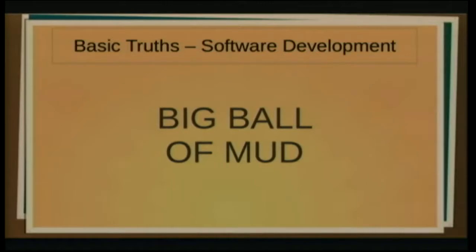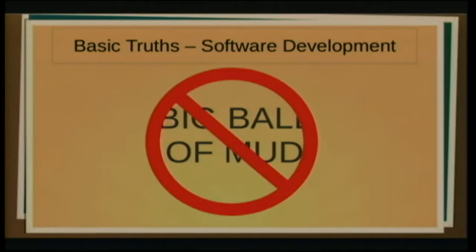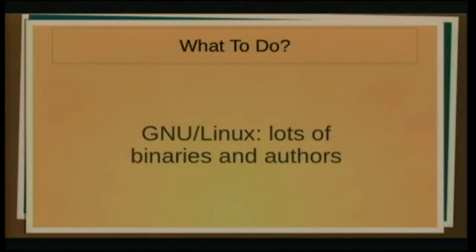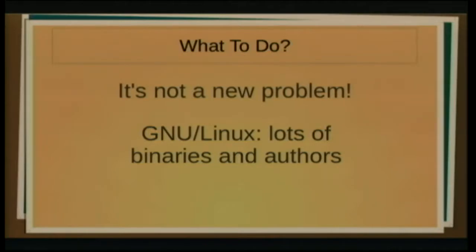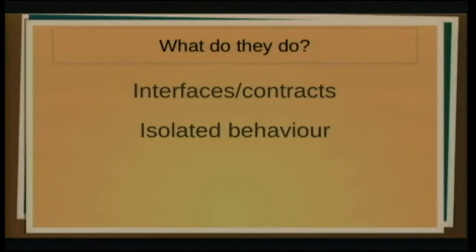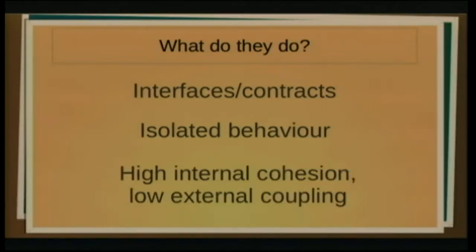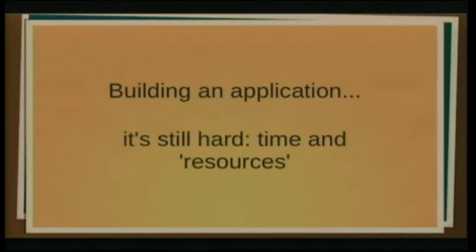What are we trying to avoid? We're trying to avoid the big ball of mud. Basically, this is a situation where adding new stuff is hard. People joining your organization find it hard to understand the system, to reason with it, to get a grip. Bugs come in easily and you can't get them out. It's really hard to reason about. Other people have already solved this - like Linux, for example: lots of binaries, lots of authors, lots of little things. It's not a new problem. You've heard this all before: interfaces, contracts, isolated behavior, high internal cohesion, low external coupling. We've all heard this before but it seems still hard to do. Building an application still takes time and resources. We don't have the time for design.